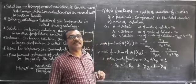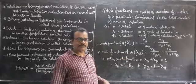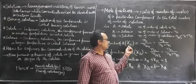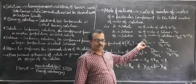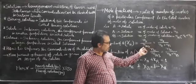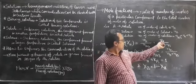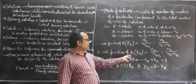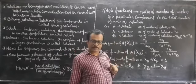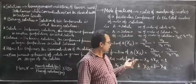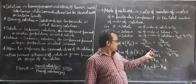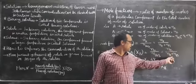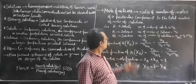The mole fraction of component A is denoted by XA. XA equals the number of moles of component A, which is Na, divided by the total number of moles of the solution NAB — which is replaced by Na plus Nb. Similarly, the mole fraction of component B is denoted by XB, and equals Nb divided by Na plus Nb. So these two are the mole fractions of components A and B respectively.